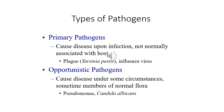Examples of primary pathogens include COVID-19 coronavirus, influenza virus, and plague. Opportunistic pathogens, in contrast, cause disease only under specific conditions or circumstances, such as in immunocompromised or low-immunity states. They are sometimes part of our normal flora — examples include Pseudomonas (a bacterium) and Candida albicans (a fungus), which are usually low-level or opportunistic pathogens.